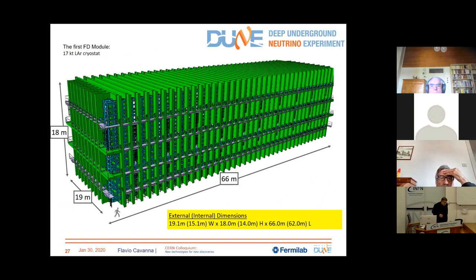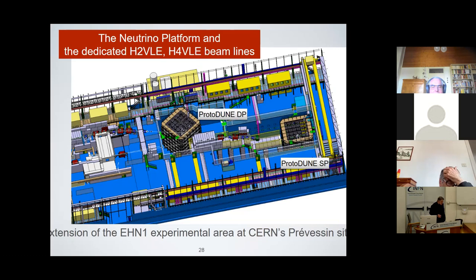The chosen technology is liquid argon — where again Italy was one of the pioneers, as this technology was invented by Carlo Rubbia. On steroids now: one of these cryostats is about 66 meters long, 19 meters wide, and 20 meters tall, and there are four of them — two at the beginning. Of course you don't do something like that without convincing yourself you can, and this was done by a large effort at CERN with extension of the North Area, where two large prototype cryostats were built.